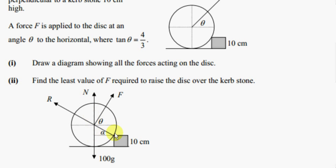We have a contact force on the disc due to the kerb stone. The contact force is perpendicular to the surface of contact, so we draw a line perpendicular to the edge of this disc. Any line perpendicular to the edge of a disc passes through the center of the disc. So the kerb stone exerts a force on the disc in a direction that passes through the center of the disc. Let's call that force R.